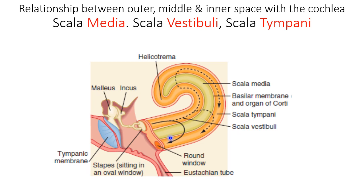Below, the scala media is bounded by the basilar membrane. At the top, it is closed by another membrane called the Reissner's membrane. The hair cells inside the cochlea are present over this basilar membrane.